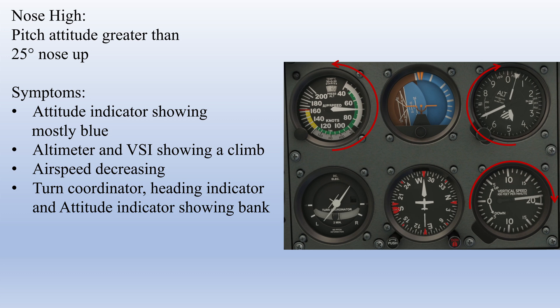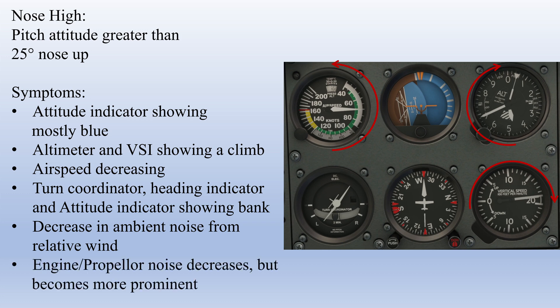Just like with a nose low attitude, there are external signs that you're in a nose high attitude. Usually the ambient noise around the airplane will be much quieter due to the decrease in the speed of the relative wind. The volume of the engine and propeller sound may get quieter, but may become more prominent as the noise of the relative wind diminishes and the engine noise diminishes a little, but not as much as the noise of the wind. The greatest threat from a nose high attitude is a stall, a subsequent spin, and loss of control.